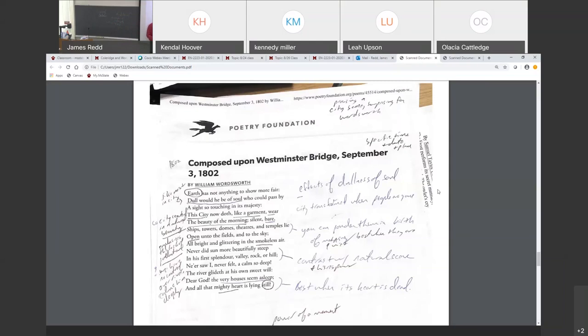Even the river glideth at its own sweet will. So the river is free. Remember that from each chartered street and the chartered Thames from the Blake poem? That's the same river right there. The river is chartered. It's like it's being guided by man in that Blake poem in London. Here it says it's free because people aren't controlling it at this moment. Dear God, the very houses seem asleep, and all that mighty heart is lying still.